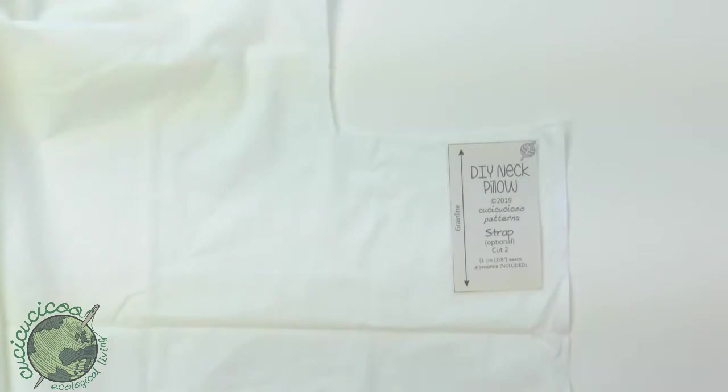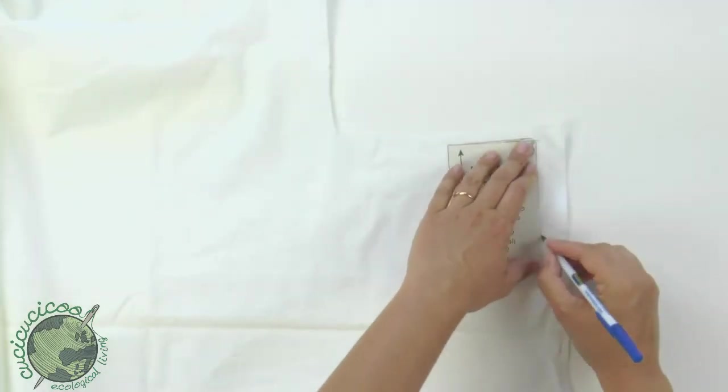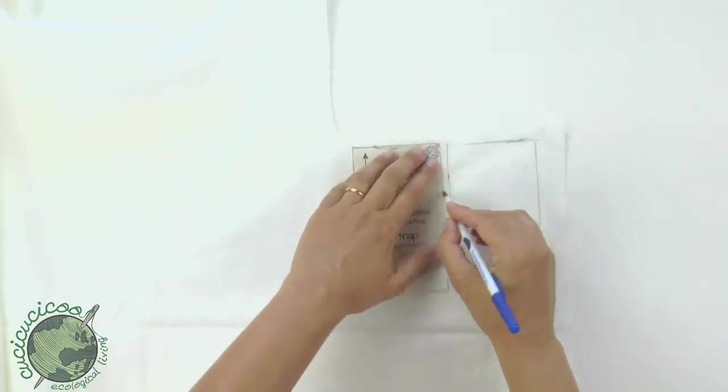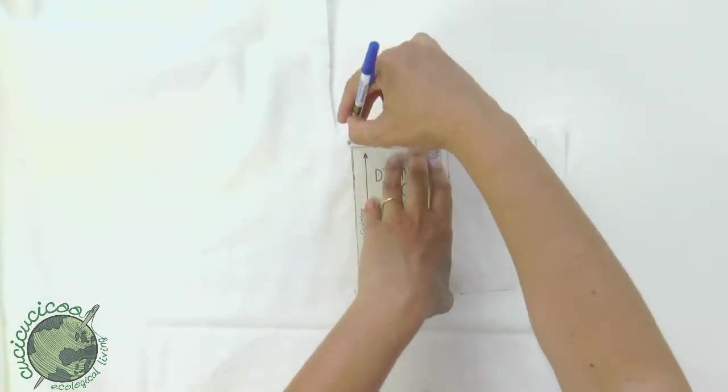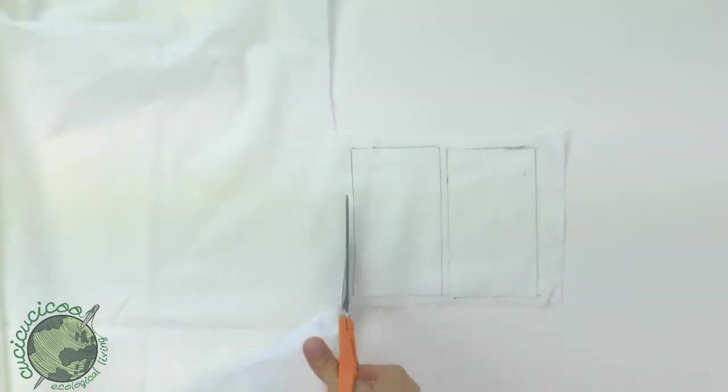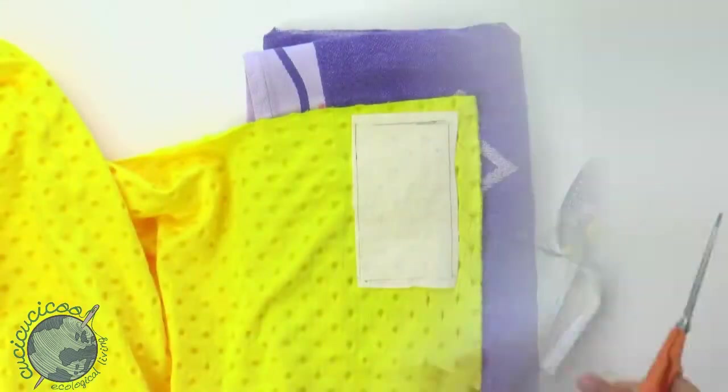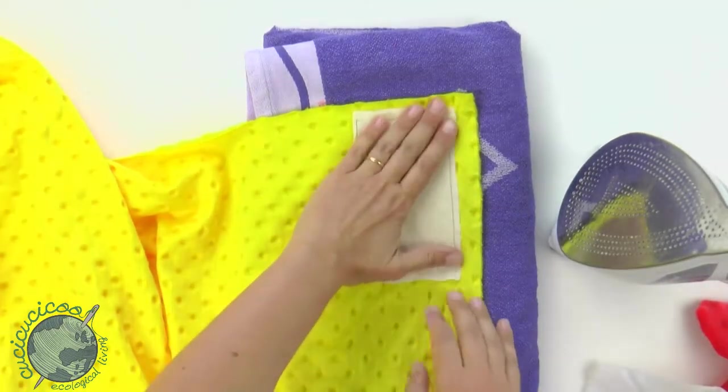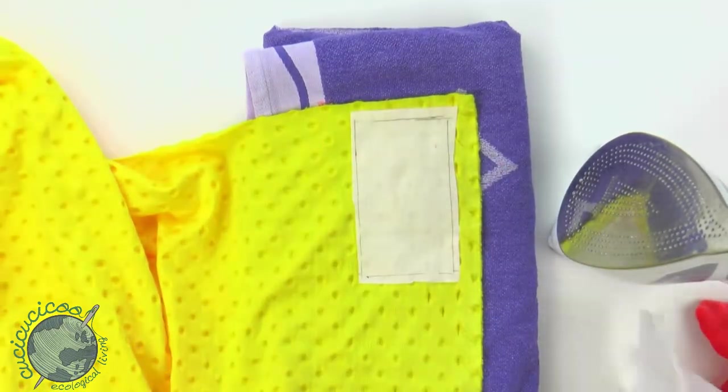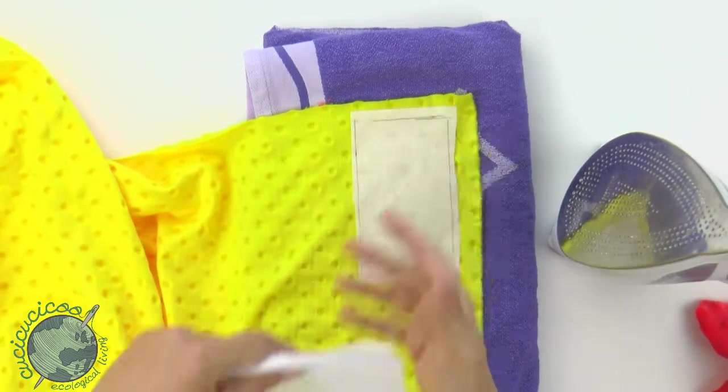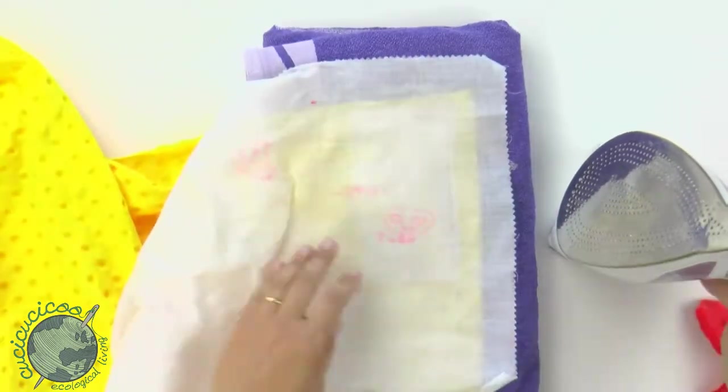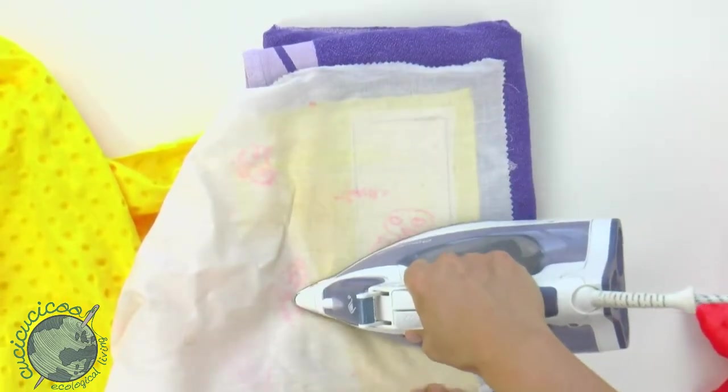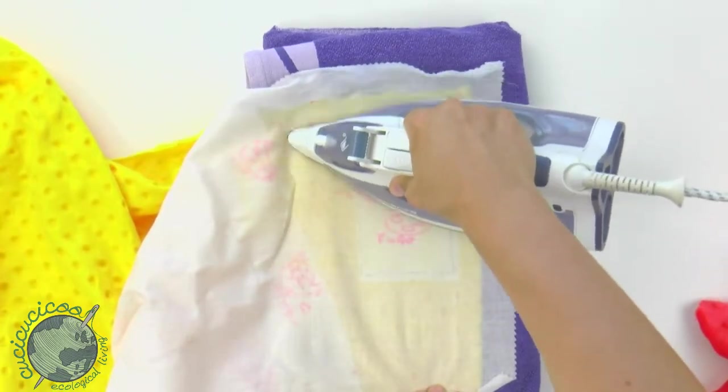Trace the strap piece twice on the non-sticky side of the medium weight interfacing. Keep them a little bit apart like this. Then cut out around them leaving a little bit of space. The green line goes down the strap piece so you need to position it that way on the fabric as well. Put it shiny side down onto the back side of your fabric. Cover it up with a protective ironing cloth and iron it on hot without steam according to the manufacturing instructions of your interfacing.